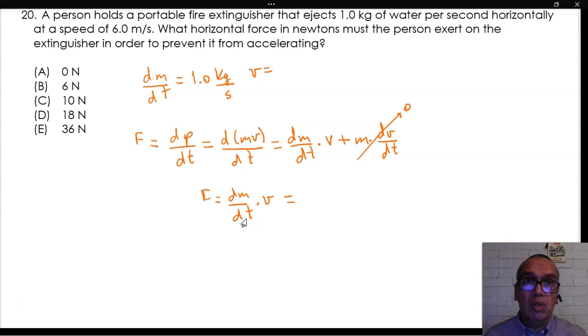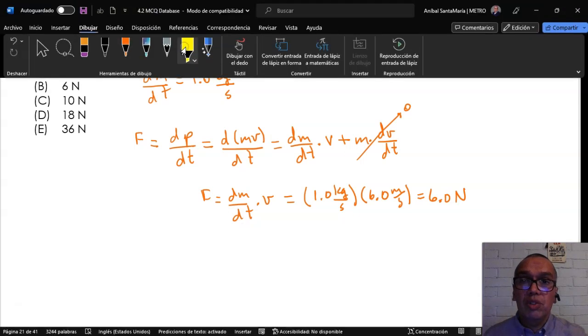Therefore, the force is equal to 1.0 kg per second times 6.0 meters per second, or 6.0 newtons. This corresponds to option B.